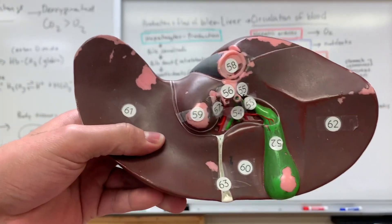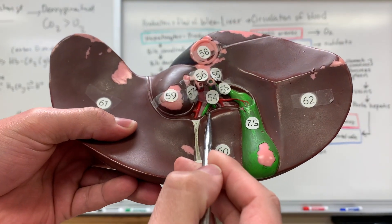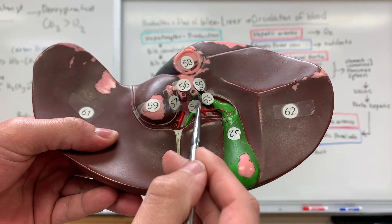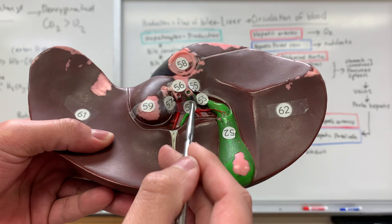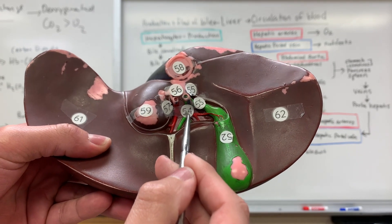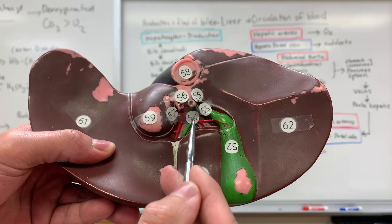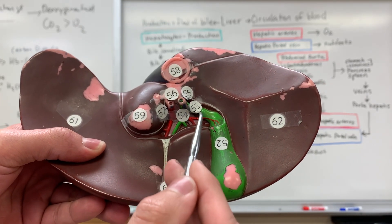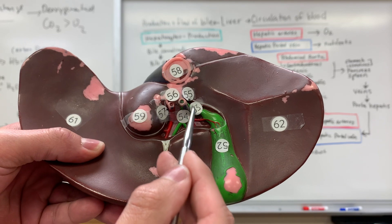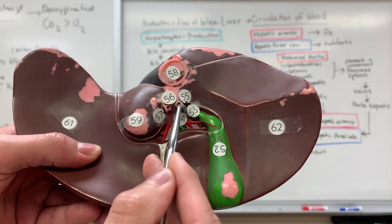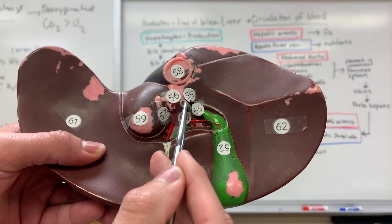So that's what leads to number 54. Number 54, this is what's known as the common hepatic duct. So you have the common hepatic duct and then the cystic duct. Both of these are merging to form the common bile duct.